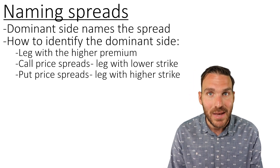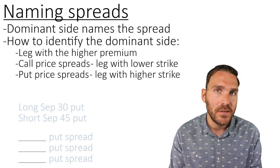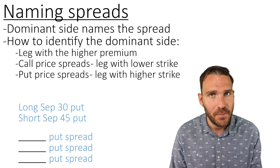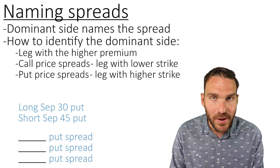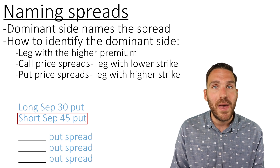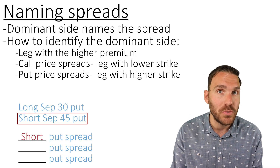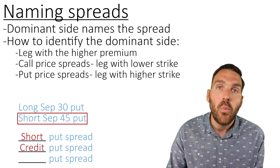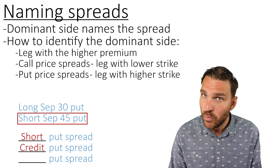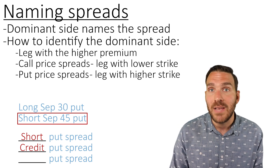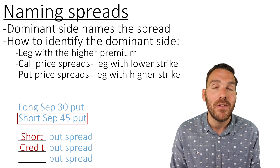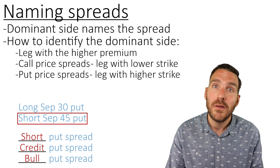Let's look at an example: a long September 30 put and a short September 45 put. This is a price spread — same expirations, different strike prices. With put spreads, the side with the higher strike price is the dominant side, which makes the short side our dominant side. We'd call this a short put spread, and also a credit put spread — credit means more money is coming into your pocket because we're selling the more valuable option. This is also known as a bull put spread because short puts are bullish.